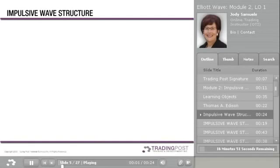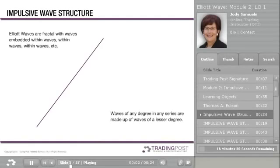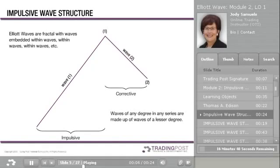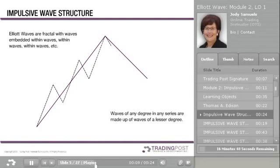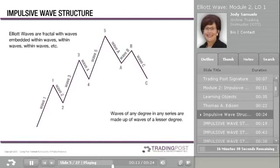Elliott waves are fractal, with waves embedded within waves. Waves of any degree in any series are made up of waves of a lesser degree. As such, this impulsive wave structure could easily be a 15-minute, hourly, daily, or weekly chart. The structure is the same in any time frame.